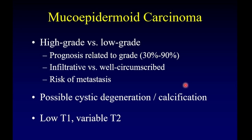Mucoepidermoid carcinoma is the most common malignancy to affect the parotid gland, although adenoid cystic is more common in the smaller glands. It comes in two forms — high-grade and low-grade — and prognosis is related to that grade: 30% five-year survival for high-grade versus 90% for low-grade. Radiologically, an infiltrative aggressive-appearing tumor indicates high grade; a well-circumscribed tumor indicates low grade. There is a high risk of metastatic disease, so a neck dissection is routinely performed even without radiologic or clinical evidence of metastases. These tumors can undergo cystic degeneration and calcification, and have low T1 signal with variable T2 signal depending on grade.